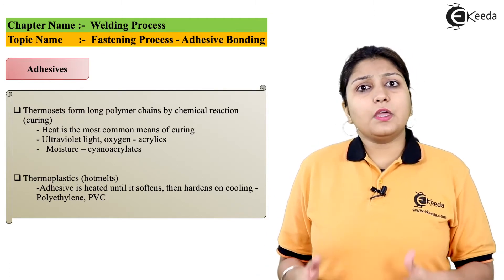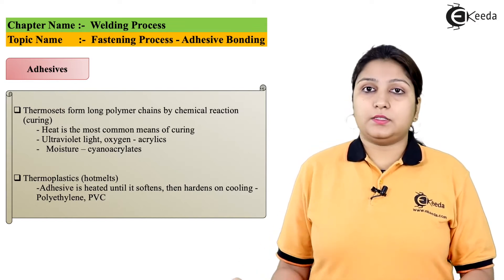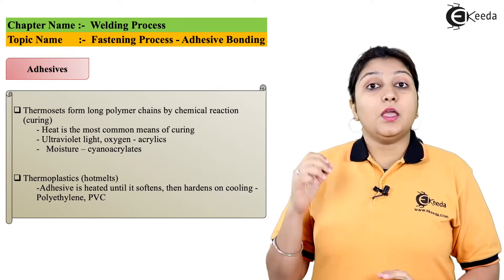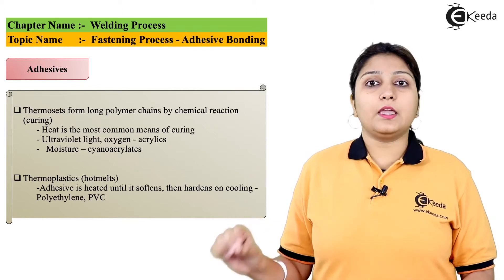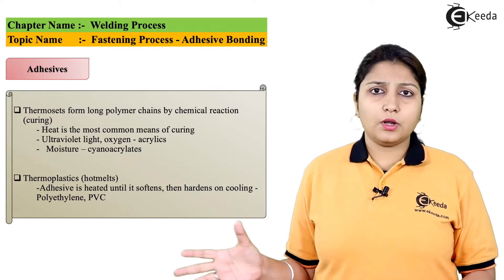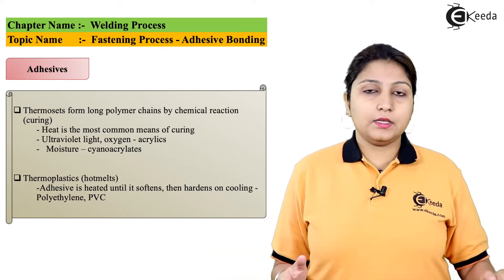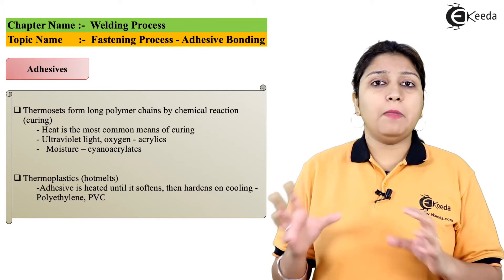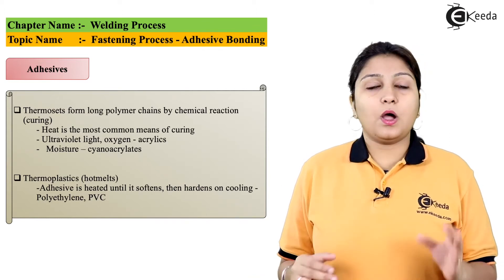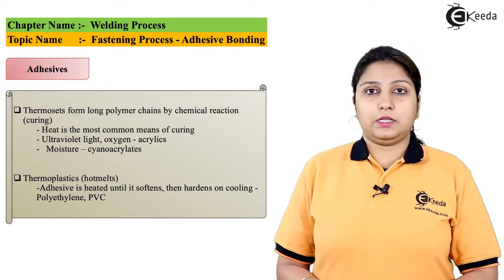Adhesives can be thermosets or thermoplastics. In thermosets, bonding is achieved through curing with heat, while in thermoplastics, bonding is done simply by melting the material. We will see how this is done in the next slide.